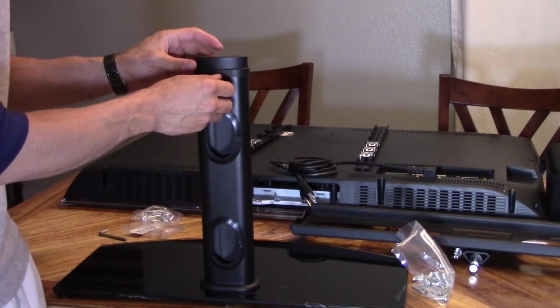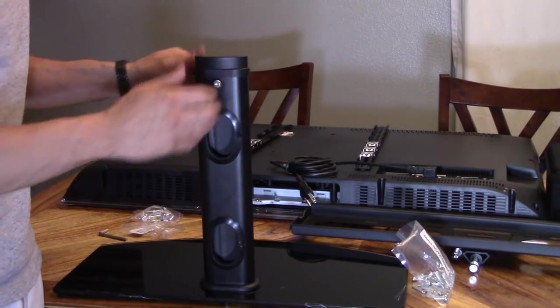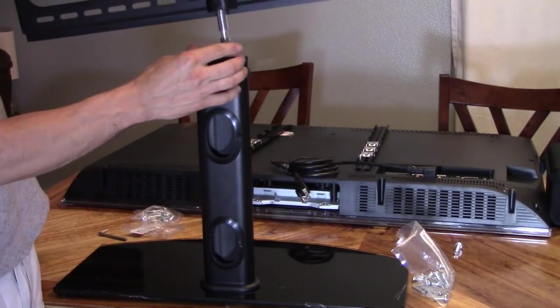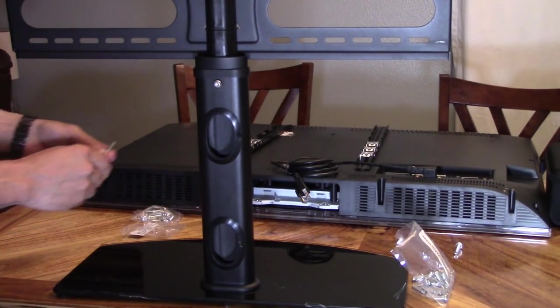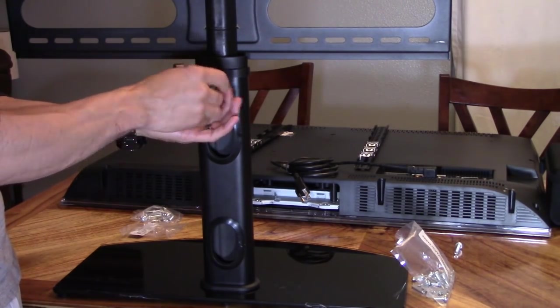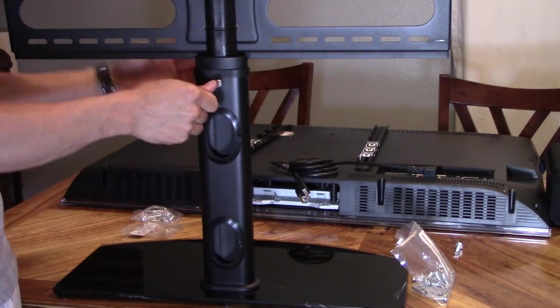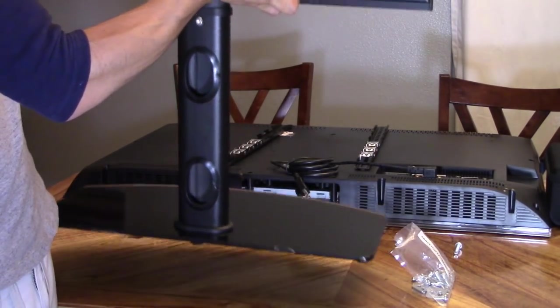And then you want to make sure the screw is a little bit loose. You don't want to tighten it too much or else you won't be able to put this cord on. And that goes on right here. And then you want to crank it down a little bit. There you go. And now, it doesn't come off.